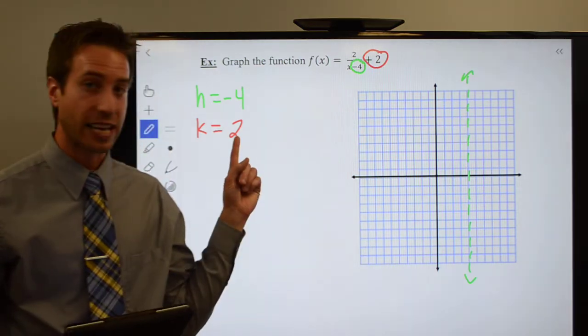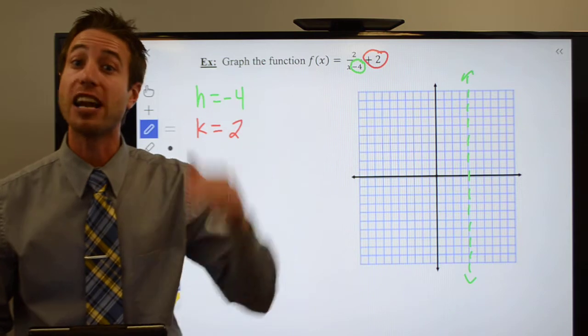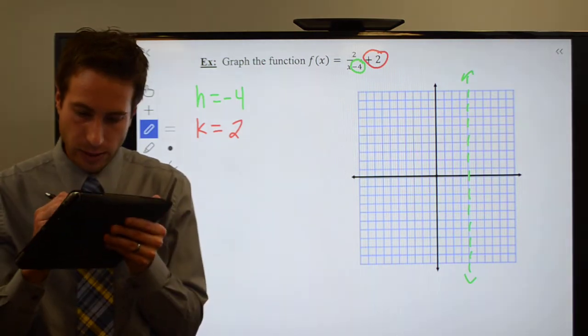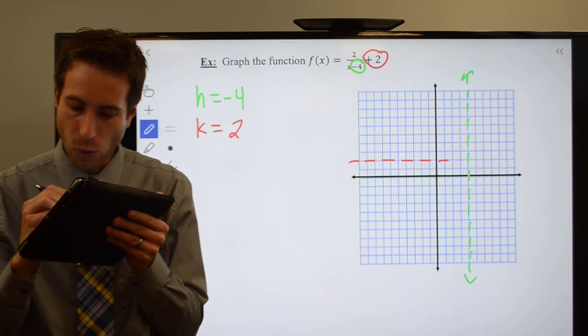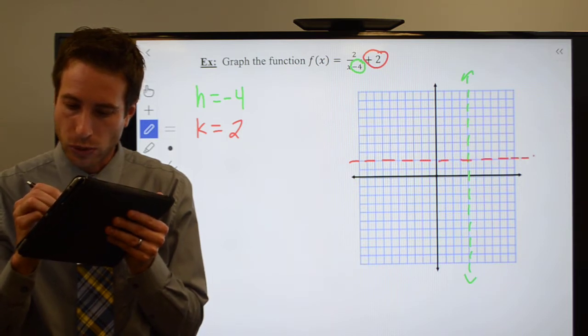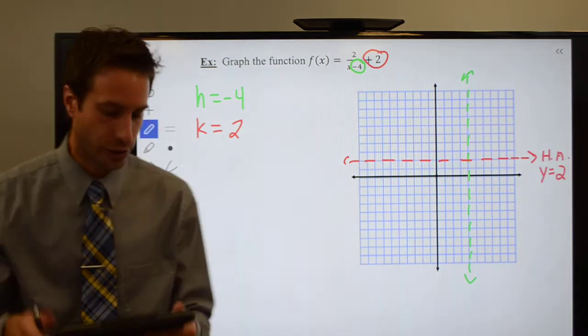Then I know that K is 2. That's going to take my horizontal asymptote and shift it up 2 units. That would be to right here at Y equals 2.